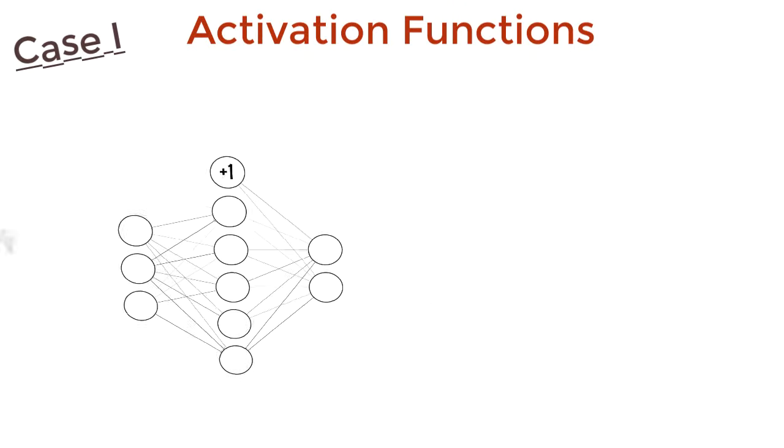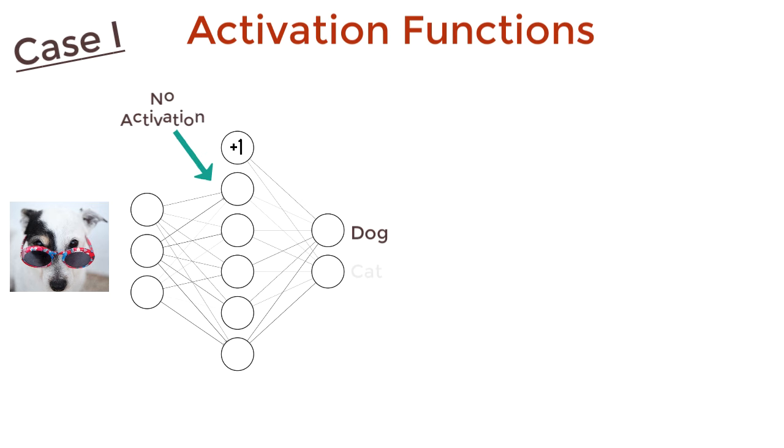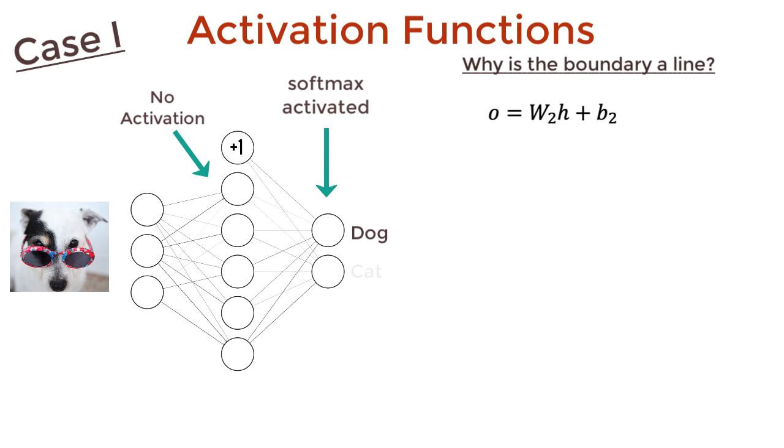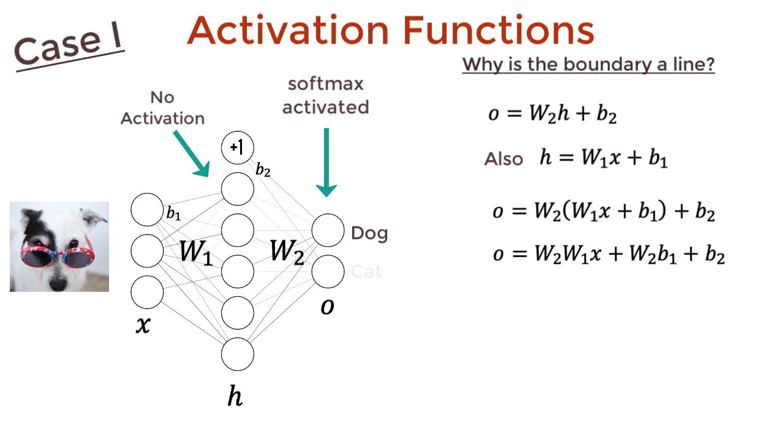Back to case one, the simple neural network with one hidden layer and no activation. The output is softmax activated. This leads to a line separator. How is this the case? Well, the output neuron can be written as w2h plus b2, where w and b are the weights and biases, and h is the output of the hidden layer. But we know that h is w1x plus b1, and so we can substitute that in the output equation, and then we just expand the brackets. The output is a linear equation of the input.